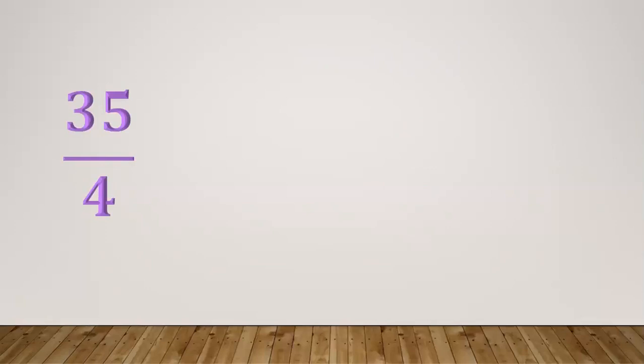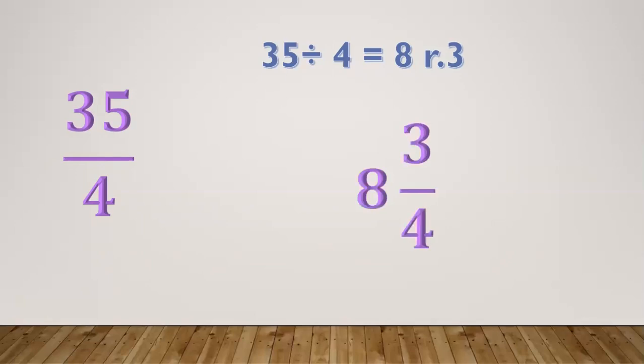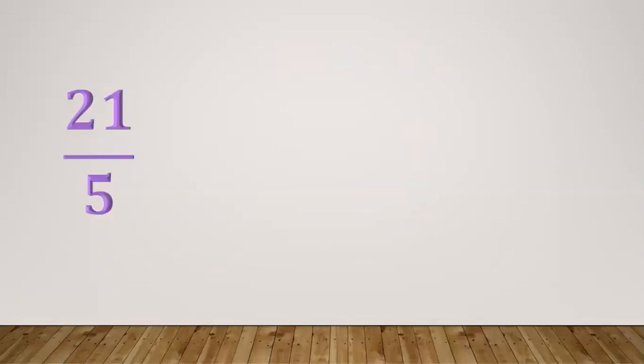Another example: 35/4. Divide 35 by 4 equals 8 remainder 3. So 8 is the whole number, 3 is the numerator, and 4 is the denominator — giving 8 and 3/4. Another one: 21/5. Divide 21 by 5 equals 4 remainder 1. So 4 is the whole number, 1 is the numerator, and copy the denominator 5.